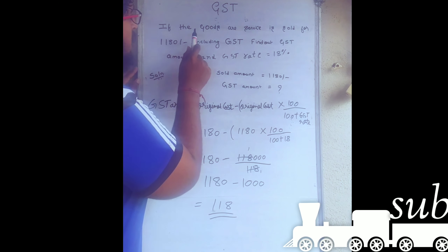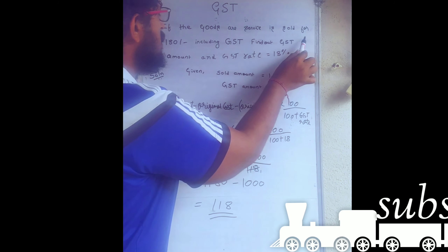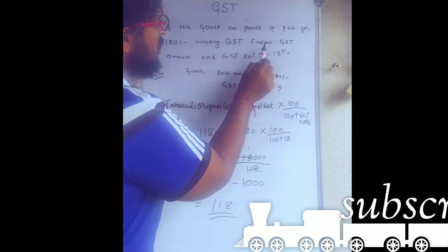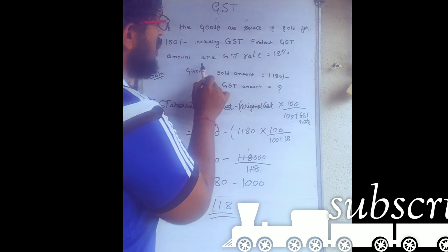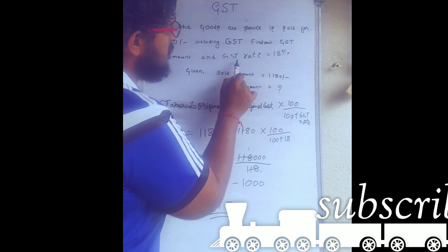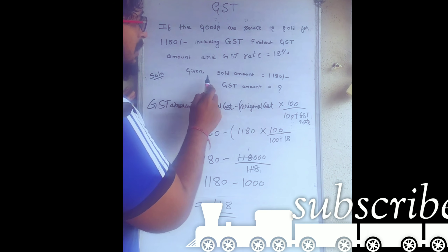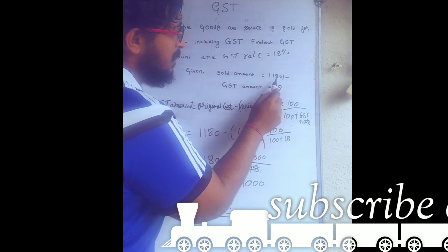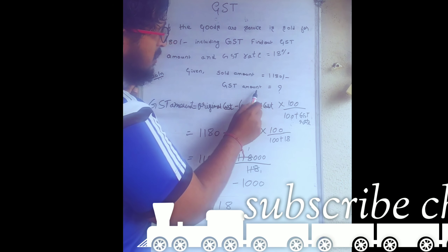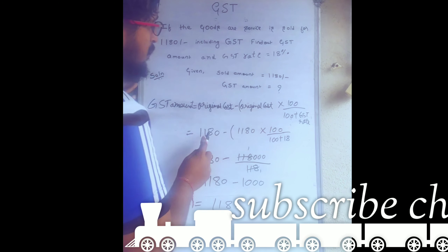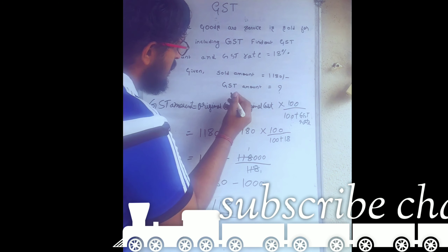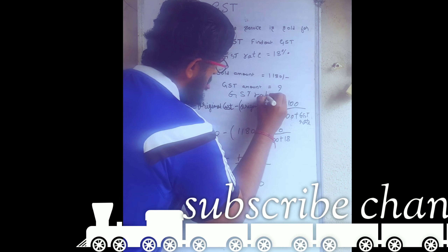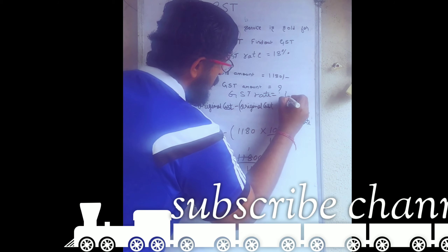In this problem, if goods and services are sold for 1180 including GST, find out the GST amount. The GST rate is 18%. The given sold amount is 1180, and the GST amount should be found out.